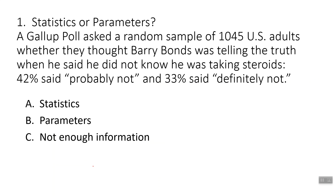Another example — statistics or parameters? A Gallup poll asked a random sample of 1,045 U.S. adults whether they thought Barry Bonds was telling the truth when he said he did not know he was taking steroids. 42 percent said probably not, and 33 percent said definitely not. The keyword here is that we took a sample. When we take samples and get information, that means these numbers are statistics — sample statistics.